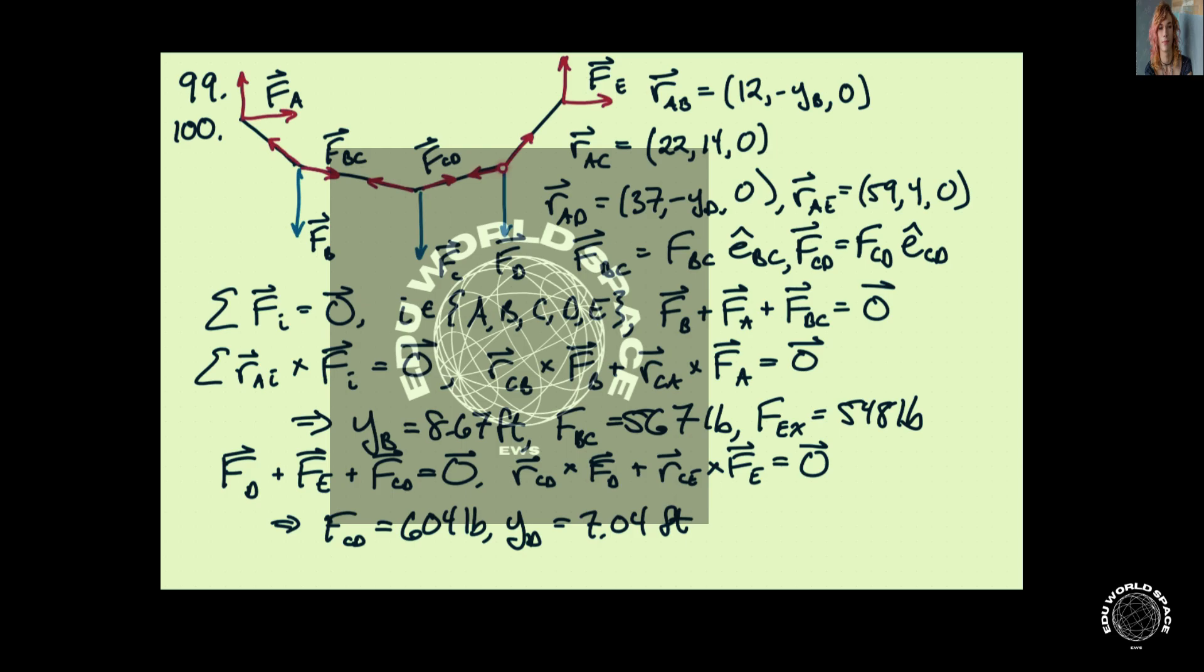Point D, we also don't know the vertical component. And point E out here at the opposite end where it's attached to ceiling is 59 feet in the horizontal direction and 4 feet above the origin.